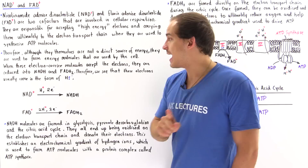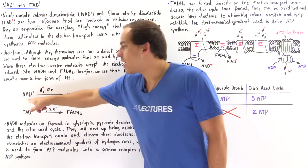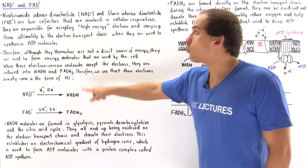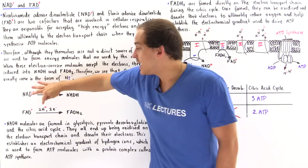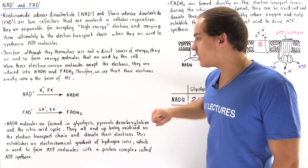The high energy electrons are accompanied by hydrogen ions. When NAD+ accepts two electrons, it also accepts a single H+ ion to form the reduced version, NADH. When FAD+ accepts two electrons, it accepts not one but two H+ ions to form the reduced version, FADH2.